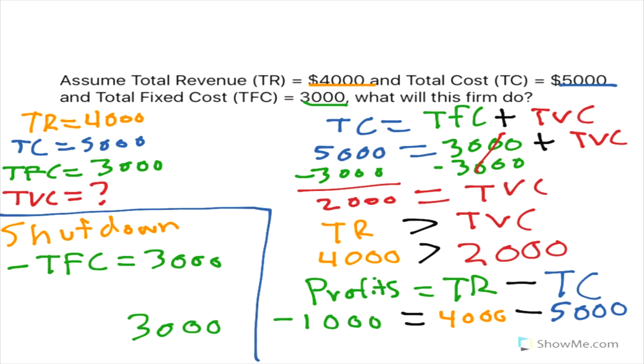If they decide to shut down, their total cost will be $3,000, versus staying in business and only losing $1,000. So if they were to shut down, they would have a greater loss than if they were to stay in business.